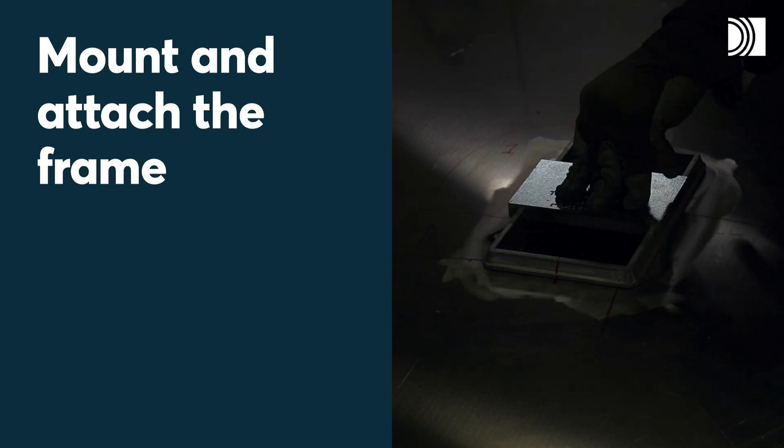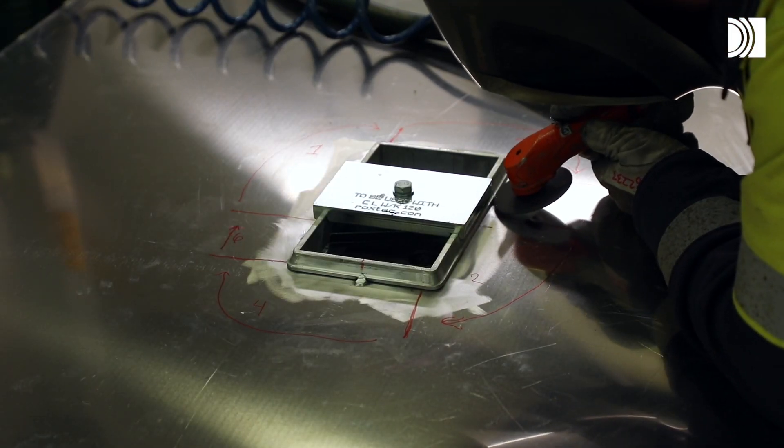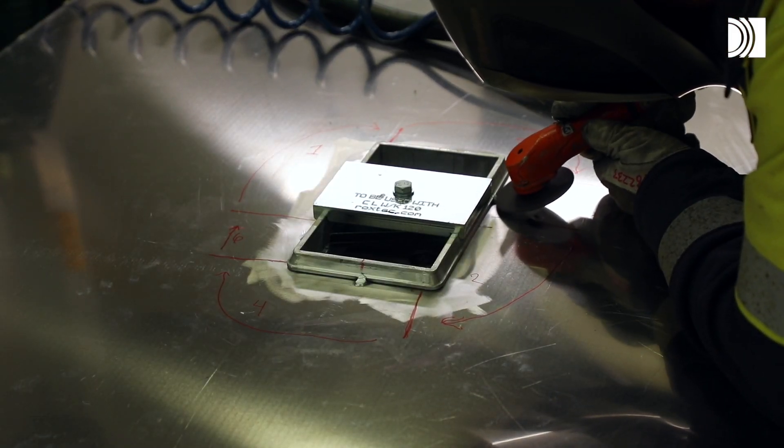Mount and attach the frame. Make or verify an aperture. Insert the frame into the aperture and fix it with the welding fixture. Tack weld the frame to the structure before tight welding it.